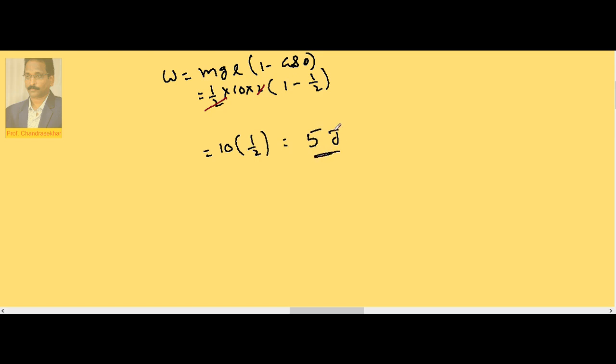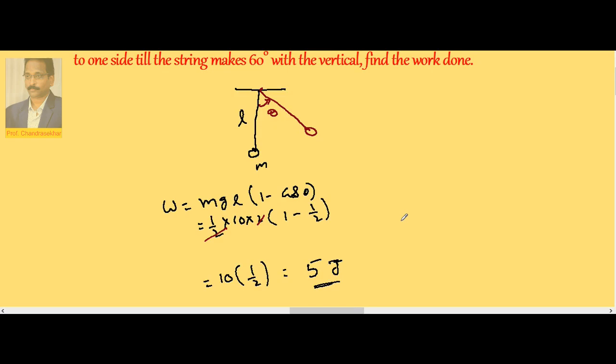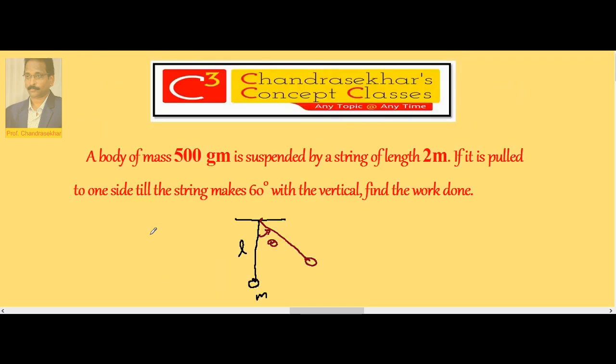The work done in pulling the simple pendulum through 60 degrees from the mean position is MgL times 1 minus cos theta. Everything is known, substitution gives the result.